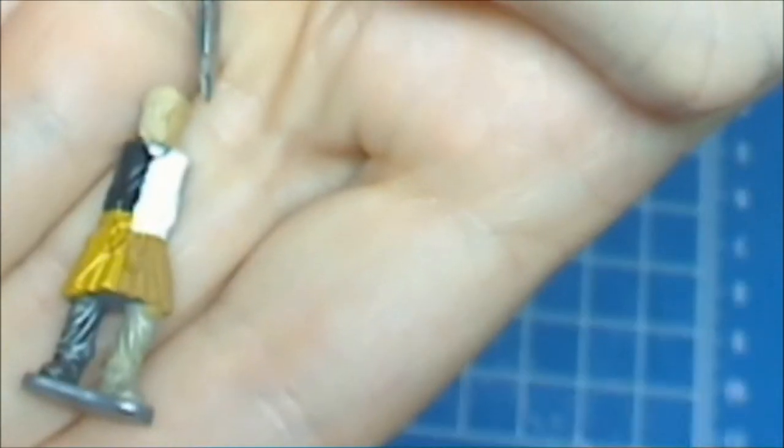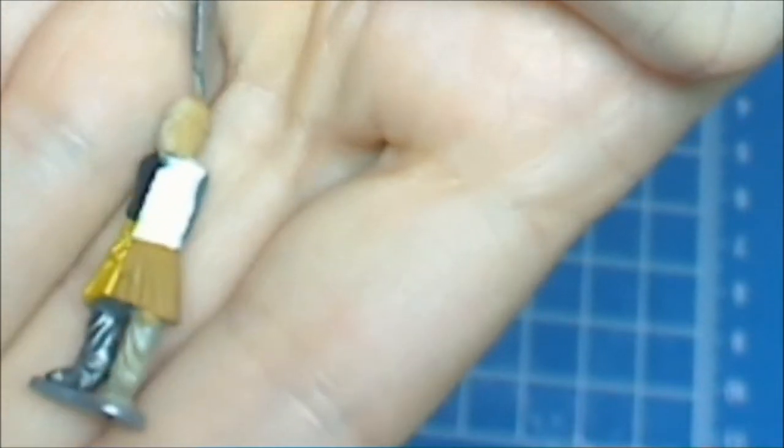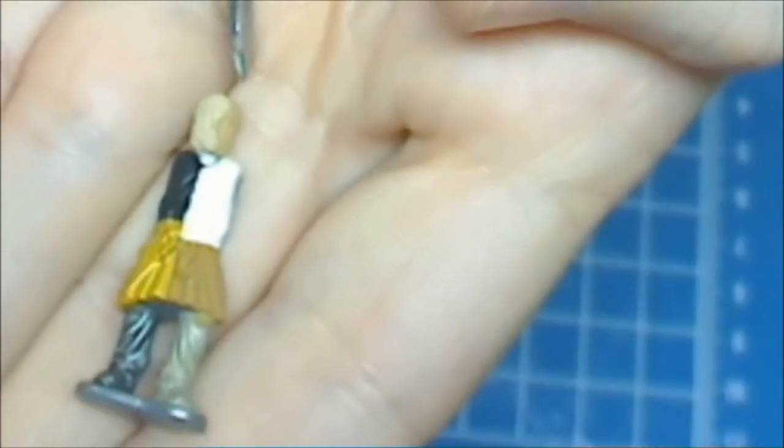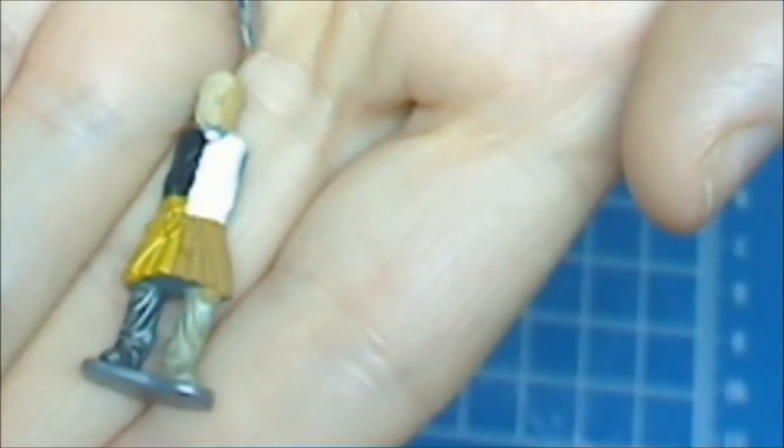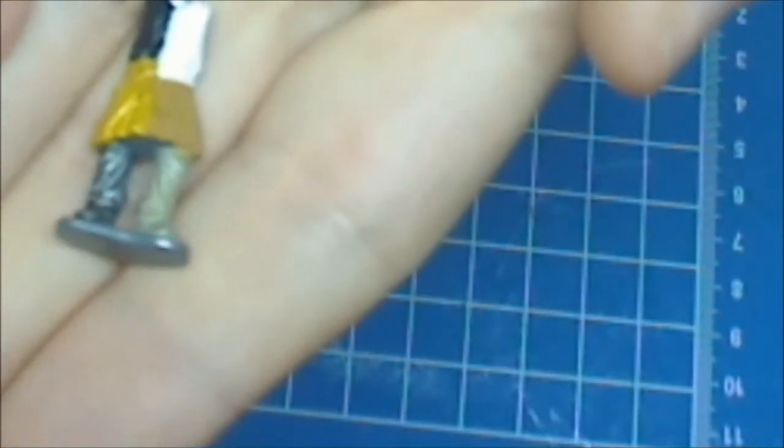This here is the Tanned Flesh by Reaper's High Definition Paint. That is two thinned down coats. Actually, it was slightly thinned down.